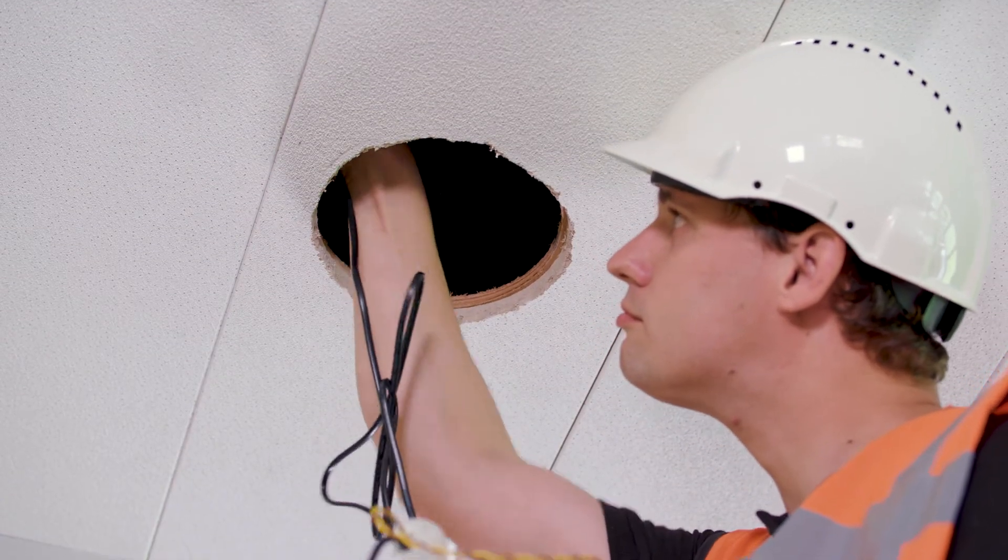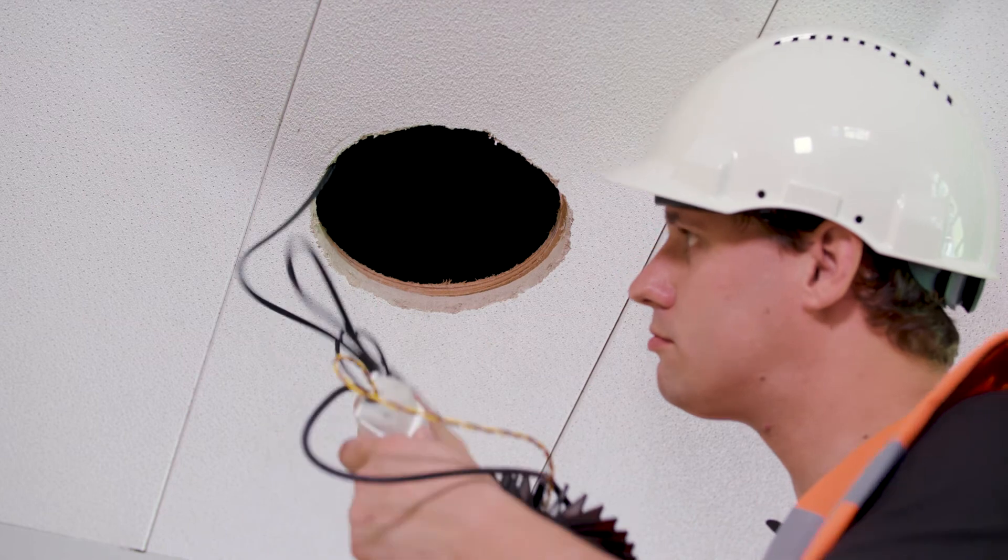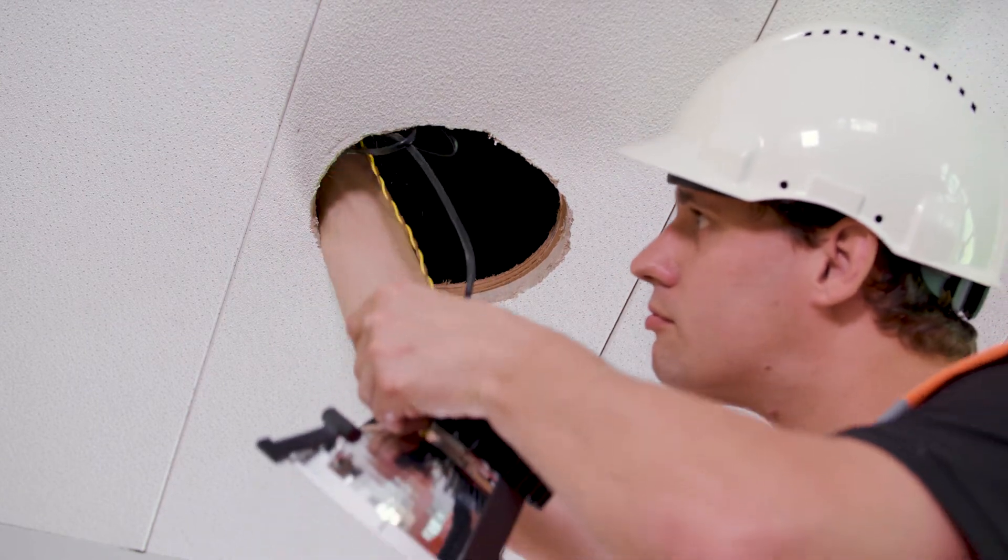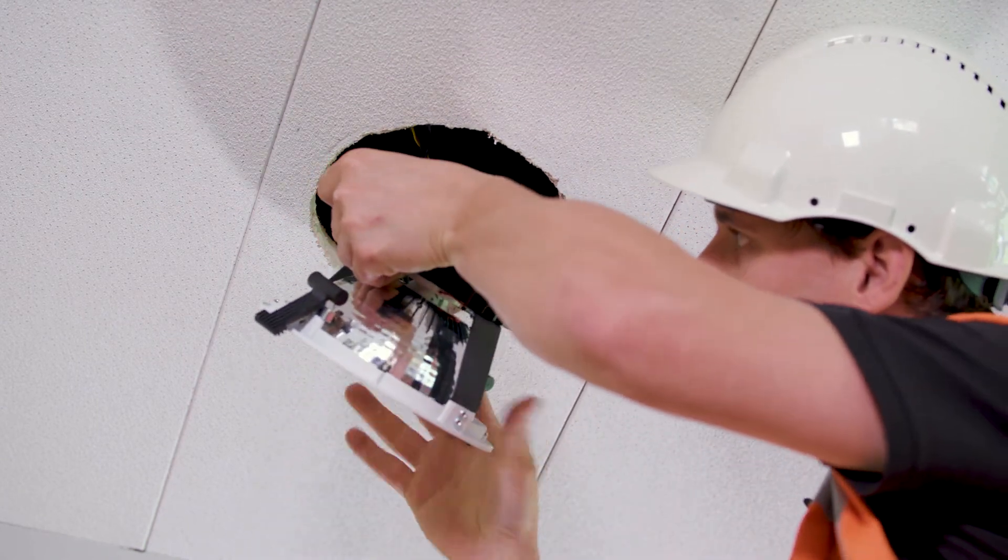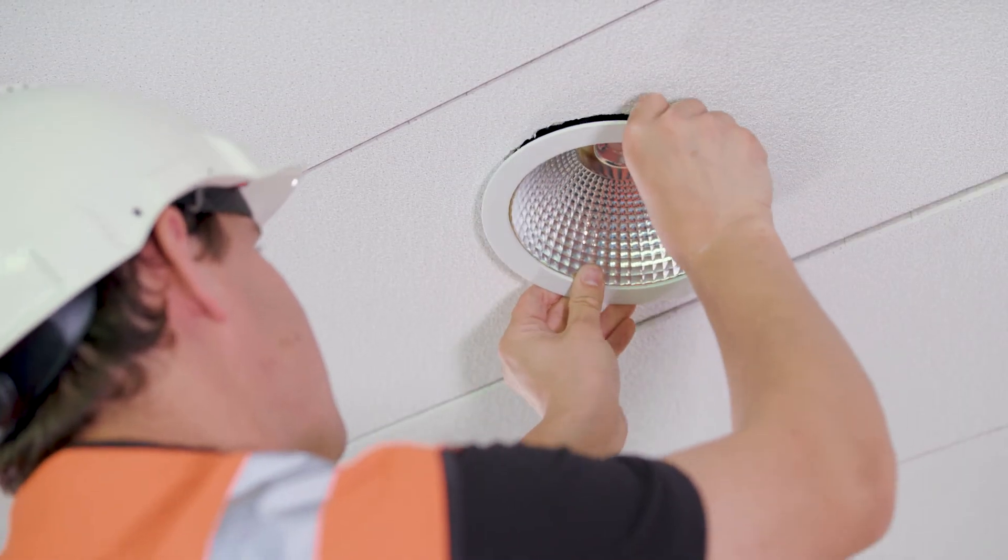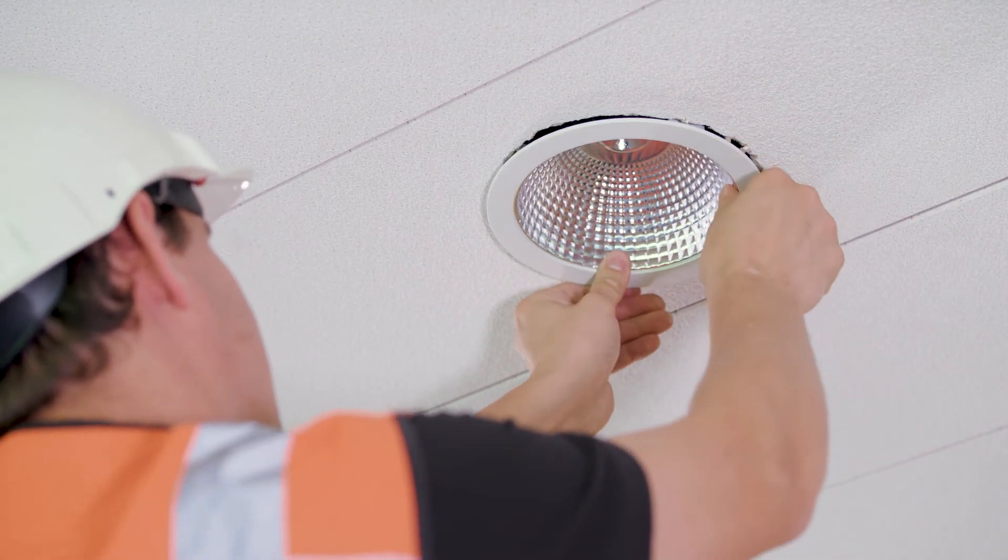Take the assembled LED downlight with LEDCODE BLE radio, connect the power cable to the power outlet, place the LED driver on the ceiling, and mount the downlight in the cutout of the ceiling.